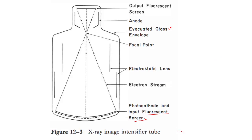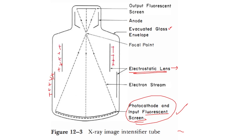Now let us learn about the electrostatic focusing lenses. These are made up of a series of positively charged electrodes plated onto the inner surface of the glass envelope. Their main function is to focus the electron beam as it flows from the photocathode to the output phosphor fluorescent screen.